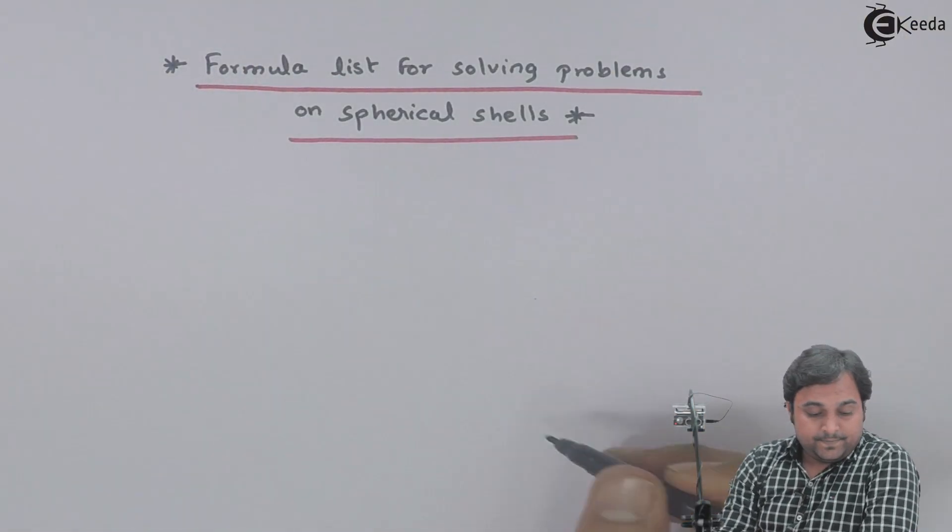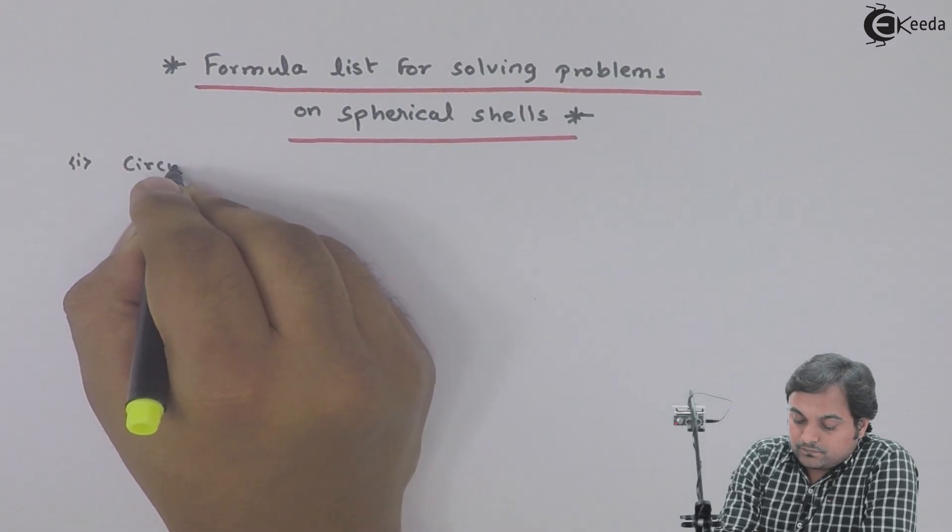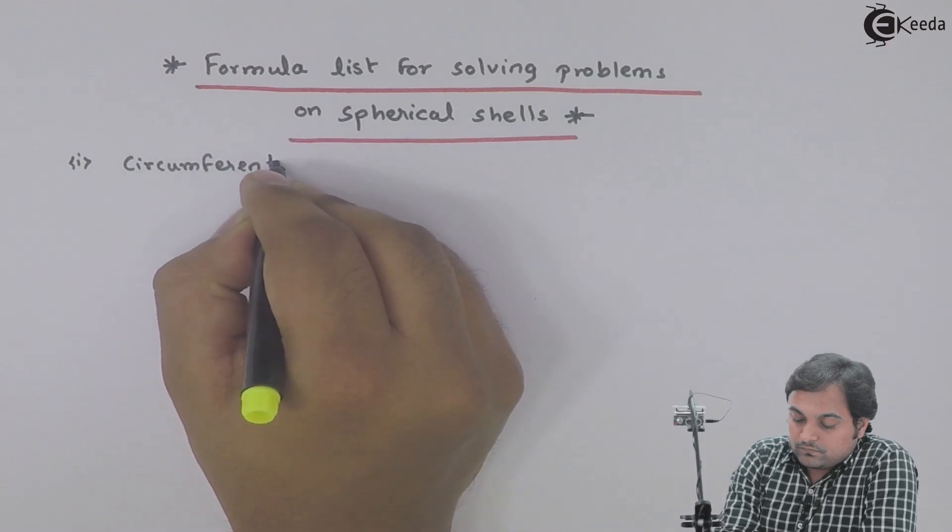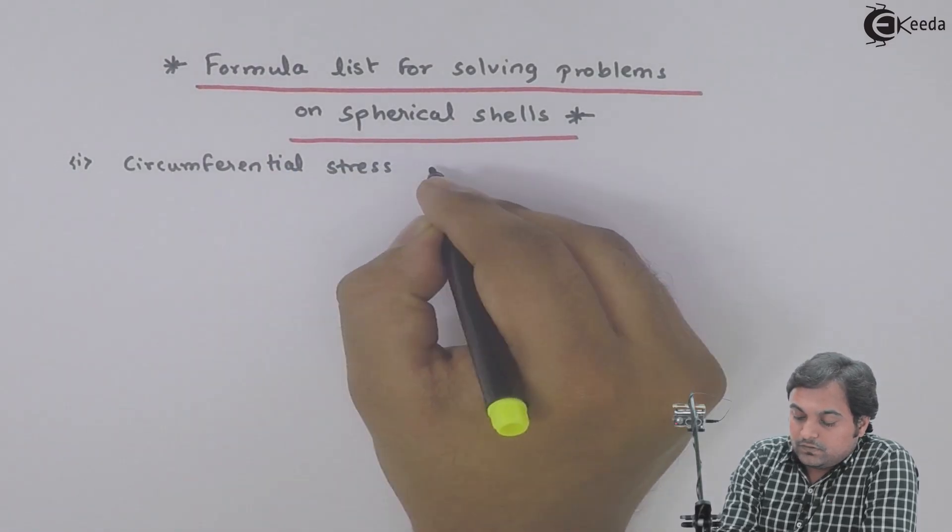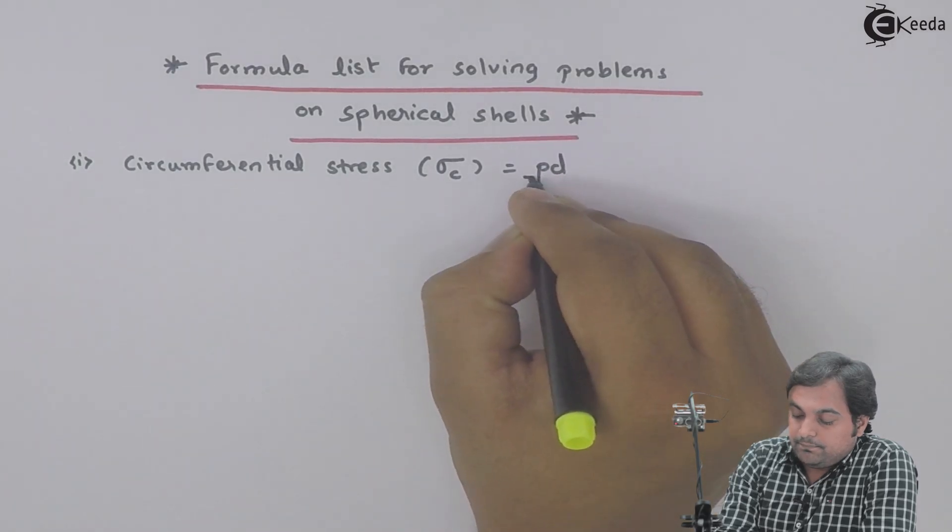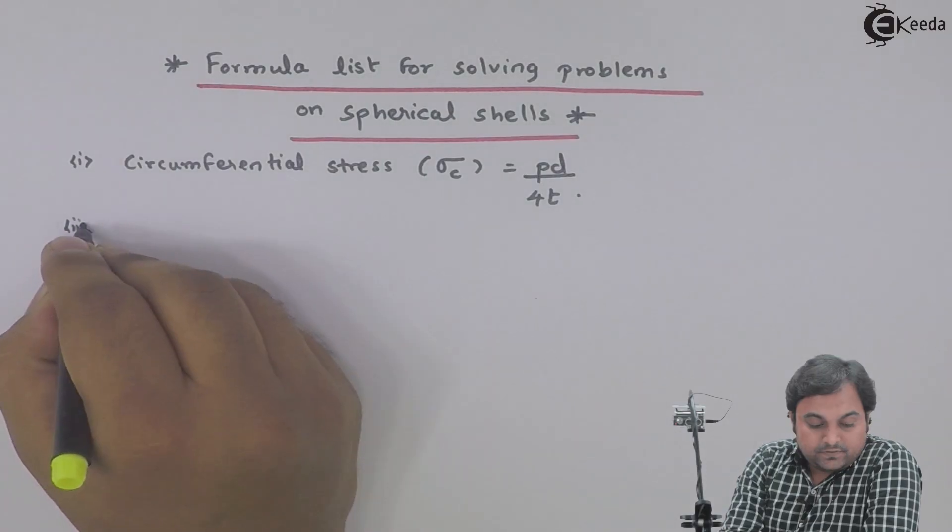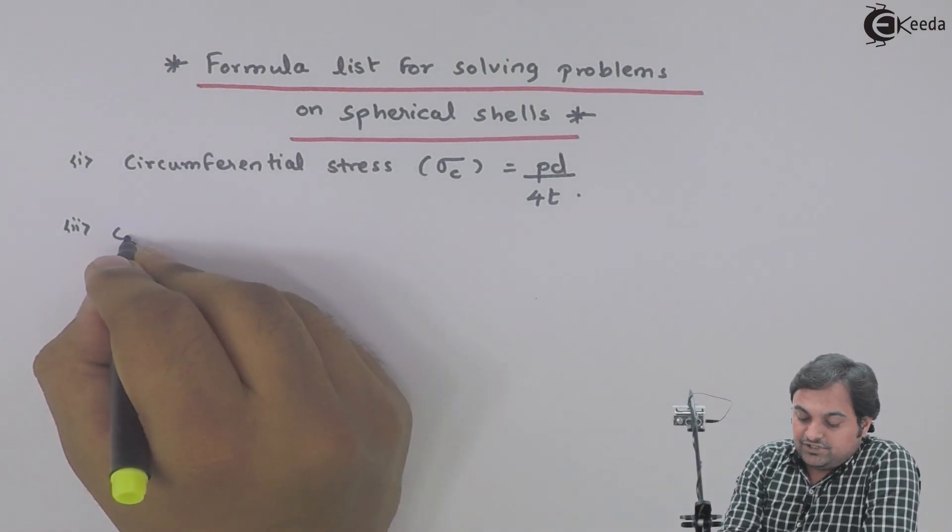The first formula is circumferential stress, that I will denote by sigma c, equals PD upon 4T. Next is change in diameter.